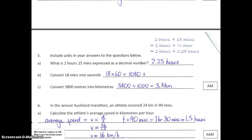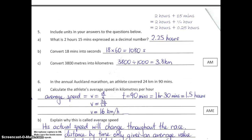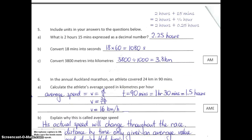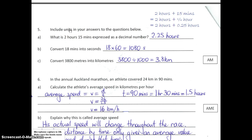Alright, next page. We're on to question 5. It starts off by saying include units in your answers to the questions below. Some people didn't read that, so you have to include units. The first question is: what is 2 hours 15 minutes expressed as a decimal number?